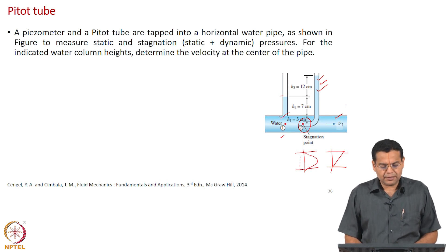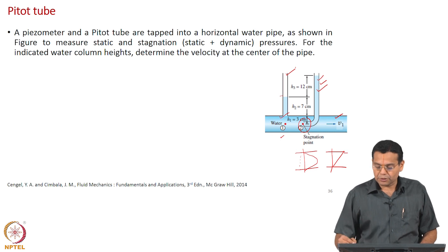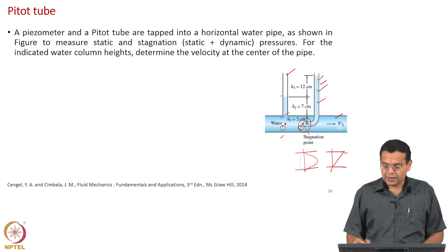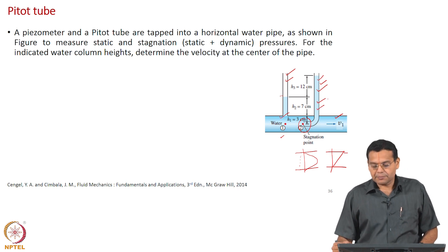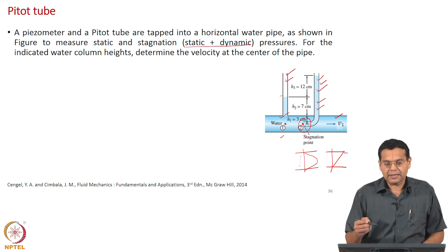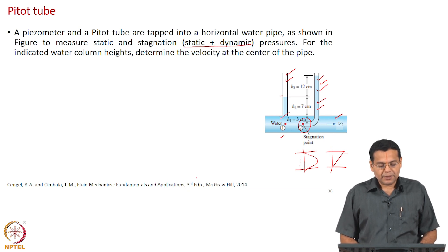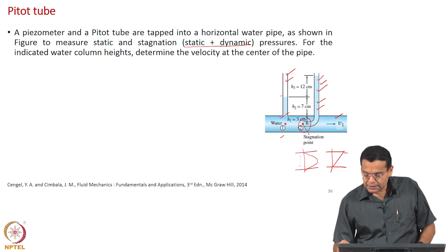Let us read the example question: a piezometer — this simple tube is called a piezometer — and a pitot tube are tapped into a horizontal water pipe as shown in the figure to measure static and stagnation pressure. What the piezometer measures is static pressure, and the second pressure is called the stagnation pressure. It is called stagnation pressure because the velocity becomes 0 at that particular point. The water column heights indicated are 3 cm, 7 cm, and 12 cm.